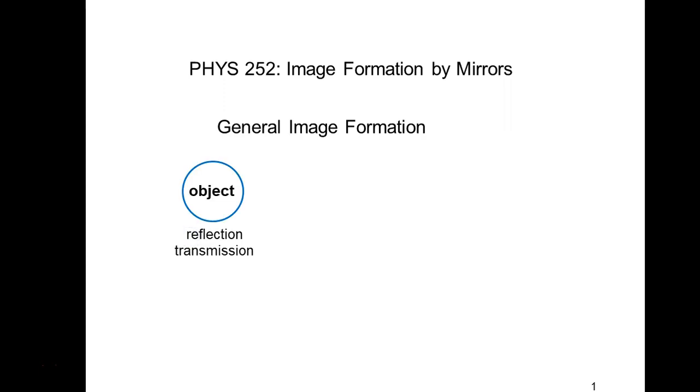Before we get to talking specifically about mirrors, I want to talk about image formation in general. I've drawn this as a flow chart. This is the first time we've talked about image formation, so I think it's appropriate to introduce some terms for any general image formation, not just by mirrors. We're going to start with an object, and light is either going to bounce off of this object — we call that a reflection object — and most objects, when they're imaged, are reflection objects. But you could have an old-time carousel slide projector as an example.